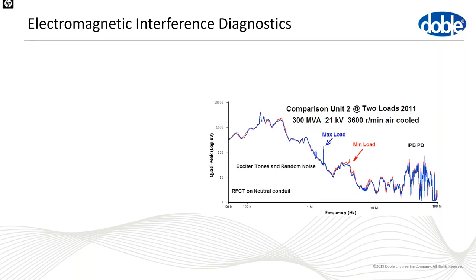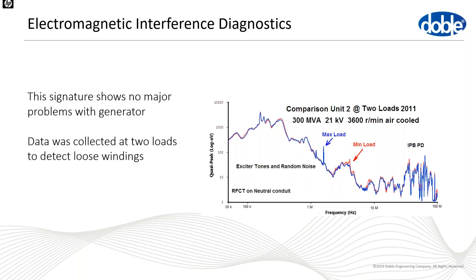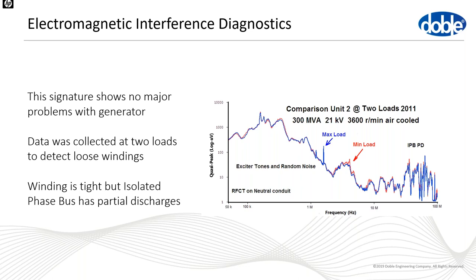Here's a case study example. For a generator with no major problems, we see excitation noise in the lower part of the spectrum and some indication of bus discharges at higher frequencies. Data was collected at two load levels to detect loose windings — an increase in stator current increases electromagnetic vibration, which raises ambient EMI levels. A significant difference between the two loads indicates windings becoming loose in the slots. In this case, the winding was tight, but there was some discharge in the bus system.